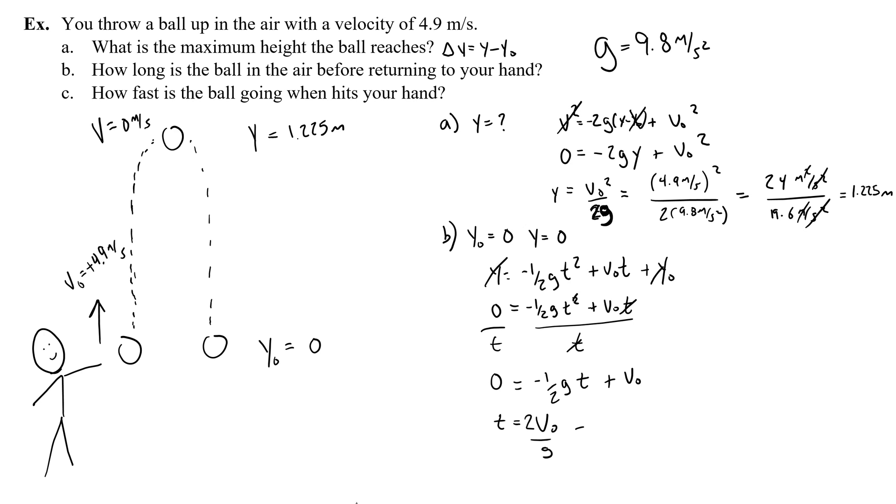So when I do that, I get an equation for time. 2 times the initial velocity, 4.9 meters per second, divided by 9.8 meters per second squared. Which is going to give me 9.8 meters per second over 9.8 meters per second squared. So the meters cancel, one of the seconds cancel, 9.8 over 9.8 is 1. And my unit is 1 over 1 over seconds, which is the same thing as just saying seconds. So it takes 1 second for the ball to go from a height of 0 back to that same height.